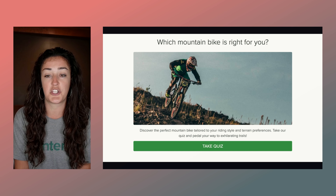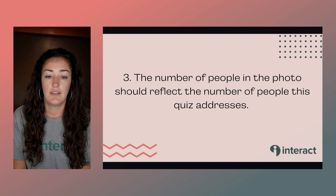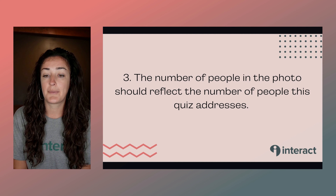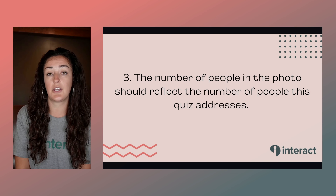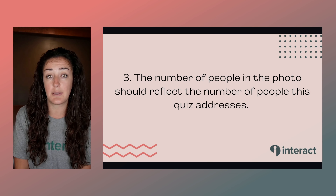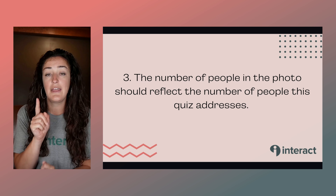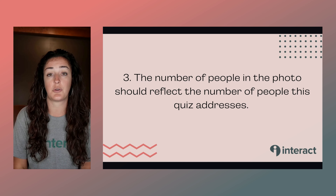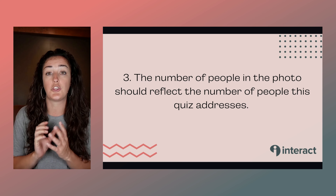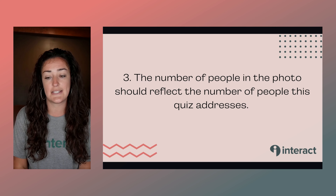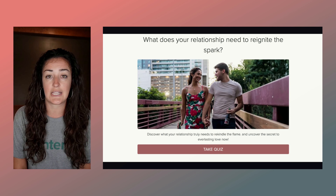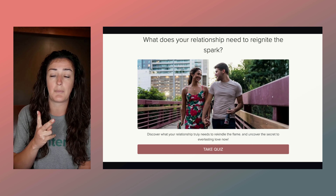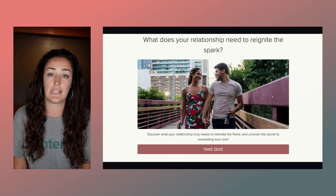Here's that exact mountain bike example — somebody actually riding a bike that someone could get at the end of 'Which mountain bike is best for you?' And tip number three: the number of people in the photo should reflect the number of people the quiz addresses. For example, 'Which diet plan is correct for you?' — that's one person, so only showcase one person. But a quiz like 'What does your relationship need to reignite the spark?' involves two people, so show both of them in the cover photo.